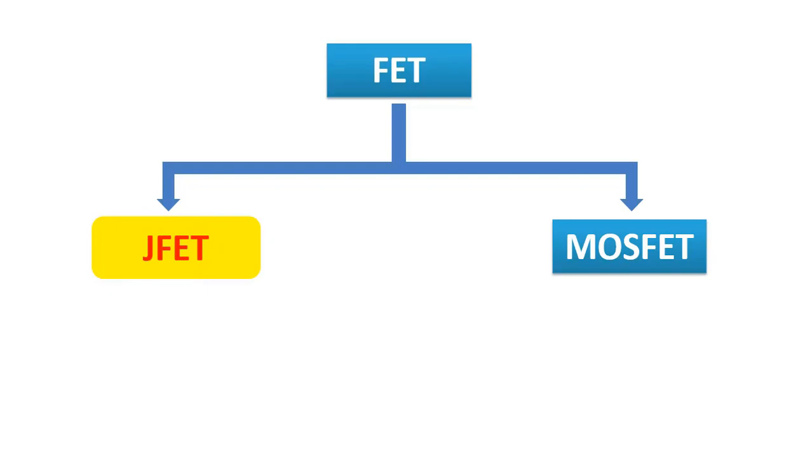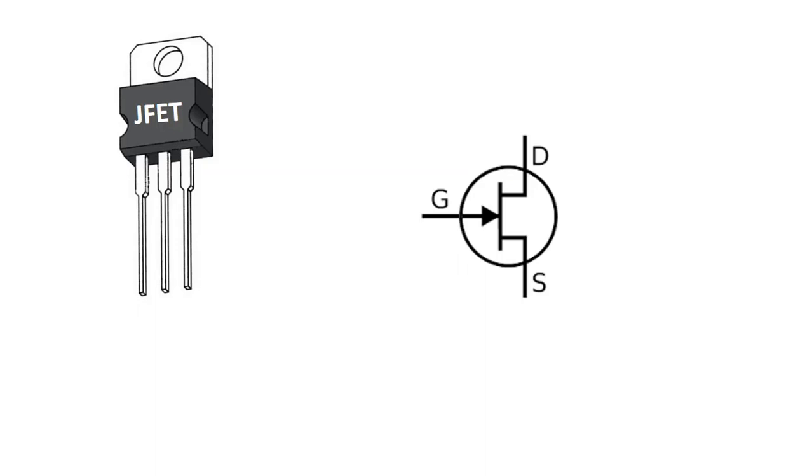JFET's abbreviation consists of the initials of the words Junction Field Effect Transistor. On the left, you see the shape of the JFET transistor and on the right, the symbol. The JFET transistor has three pins. One of them is Gate, the other one is Drain, and the last one is Source. They are denoted by the abbreviations G, D, and S.